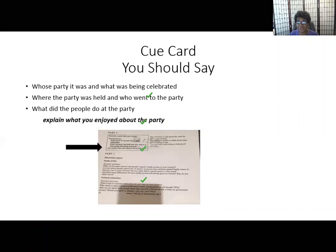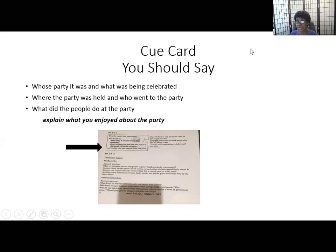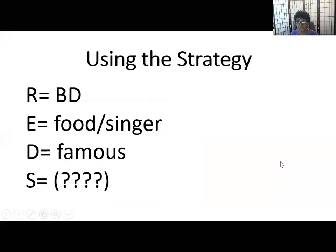Here's your cue card again. Remember you need to say whose party it was and what was being celebrated. You will need to tell where the party was held, who went to the party, and what did the people do at the party. You don't have to answer all of these — these are just here to guide you if you choose to use them.